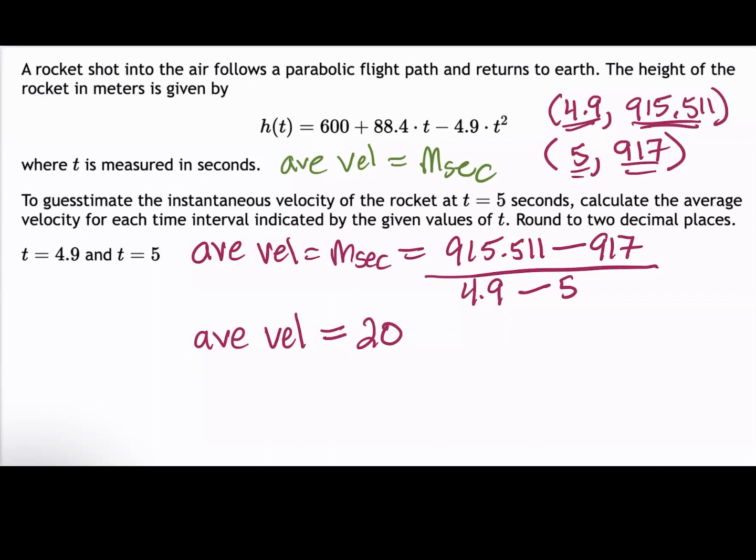And typically in a handwritten problem, we would include the units. The output value is meters, so that would be meters per second. And the input value is seconds. But we only need to enter the numerical value.